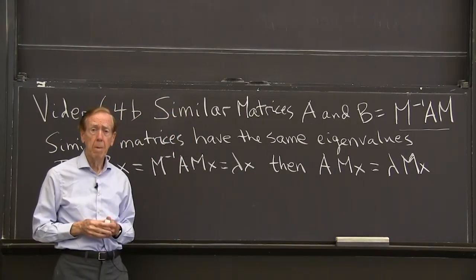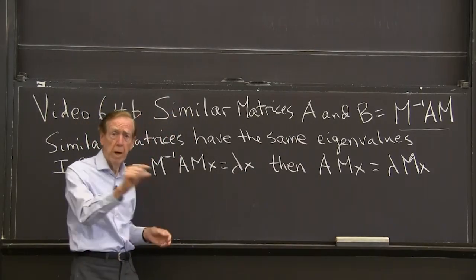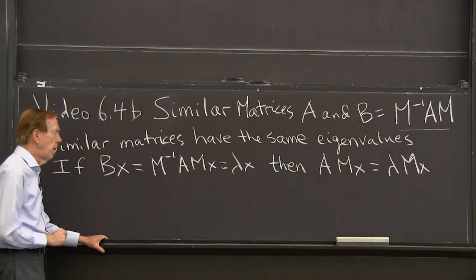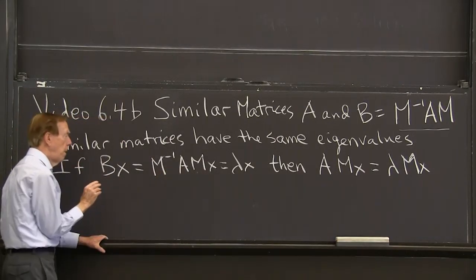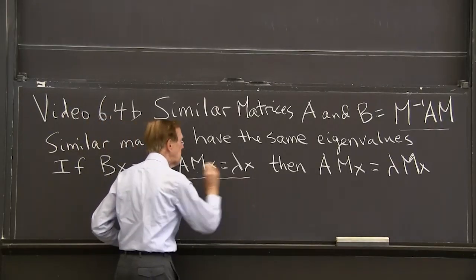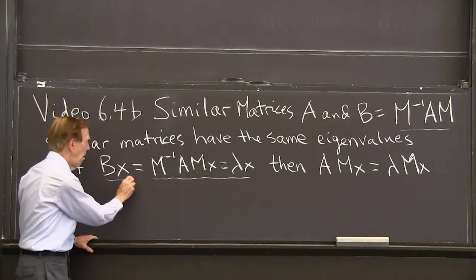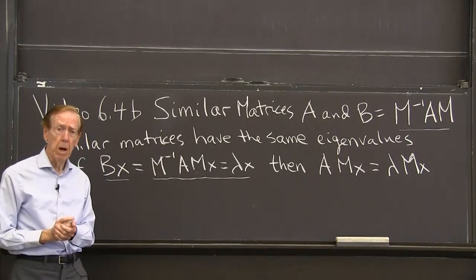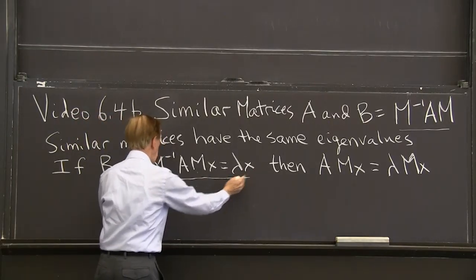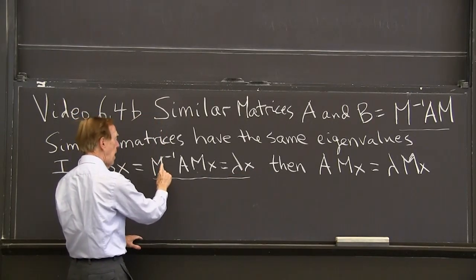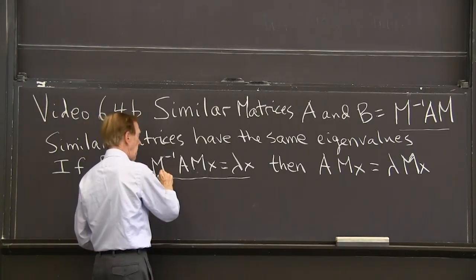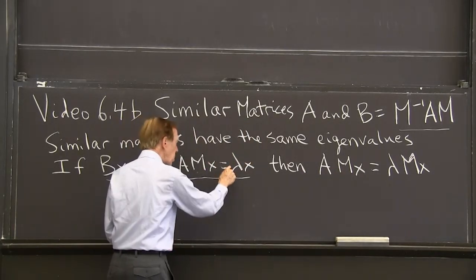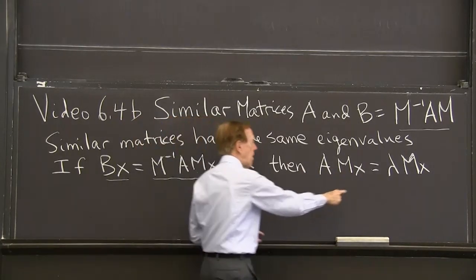Why do they have the same eigenvalues? I'll just show you, just one line. Suppose B has an eigenvalue lambda. So B is M inverse AM. So I have this. M inverse AMX is lambda X. That's BX. B has an eigenvalue lambda. I want to show that A has an eigenvalue lambda. OK. So I look at this. I multiply both sides by M. That cancels this. So when I multiply by M, this is gone. And I have AMX.